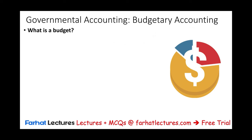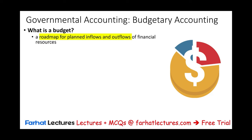First, let's make sure we know what a budget is. A budget is a roadmap — a plan for inflows and outflows of financial resources. To keep it simple, let's call financial resources cash. So a budget is: what do you expect to receive in cash, and what do you expect to spend in cash? Hopefully you like to have more inflows than outflows.